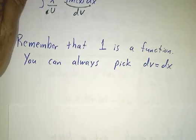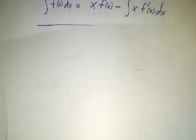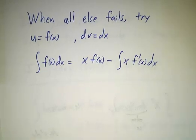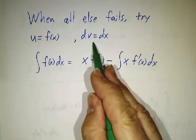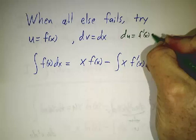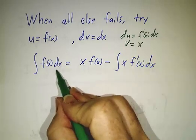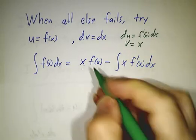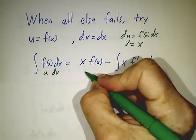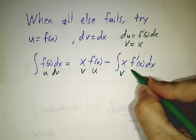Last trick is if you don't see how to split things up, you can always pick the entire integrand to be u and just let dv be dx. So here's the rule. When all else fails, let everything be u and let dv be dx. And then du will be f prime dx and v will just be x. So the integral of anything dx is x times that anything. This is u, this is dv. This is u, this is v. This is v, this is du.